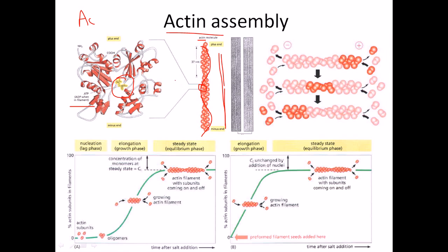During actin assembly, the first few actin proteins along with ATP come together to form a core called the actin nucleus. After nucleus formation, further sets of actin proteins come in and attach. Typically, two actin proteins come in together as a dimer and join to the existing structure. These actin dimers bind after the nucleation event to carry out elongation.